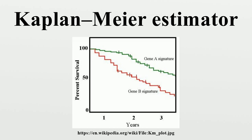Another potential error is if a competing event were to arise. For example, if a doctor was using the Kaplan-Meier estimator to follow a patient with a malignant brain tumor and the patient were to die, the estimator could no longer be used. Overall, the Kaplan-Meier estimator provides more benefits than limitations; however, patients or participants involved should be notified of these potential errors.